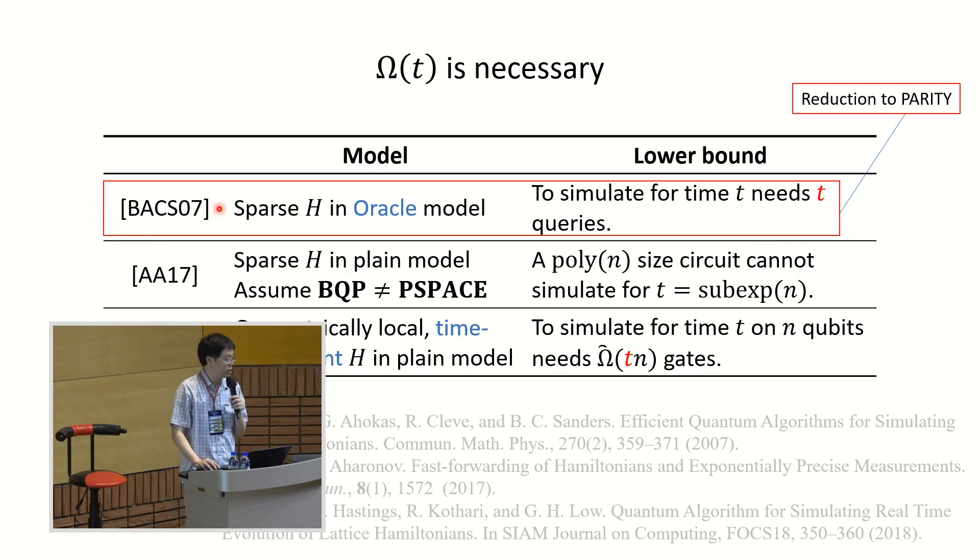The first one is the earliest one, and the one we focus on. In BACS07, we already have this omega T necessary result, and it's in the Oracle model. So basically, we have an Oracle problem that we embedded into our Hamiltonian simulation. And the Oracle problem is parity. So parity is a problem that requires linear number of queries to solve. So in this BACS paper, the authors are able to embed parity to the Hamiltonian simulation problem, and they show that because parity requires linear number of queries, Hamiltonian simulation also requires linear amount of queries to simulate for time T.